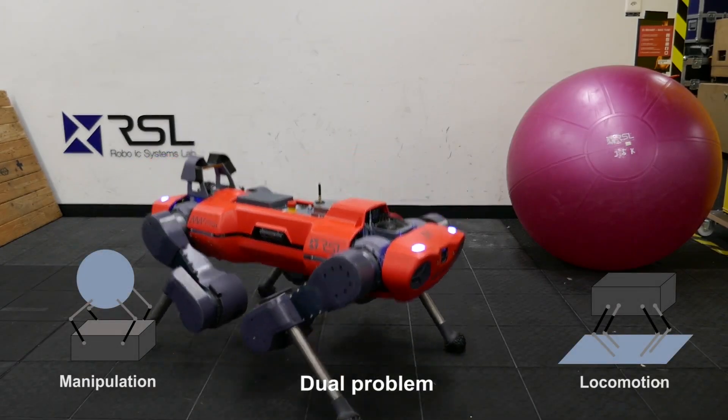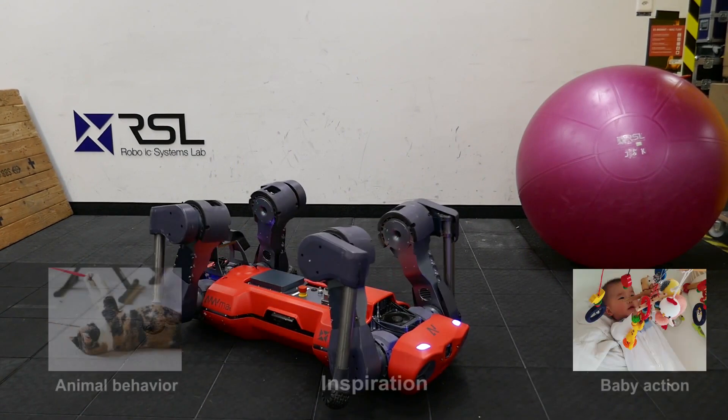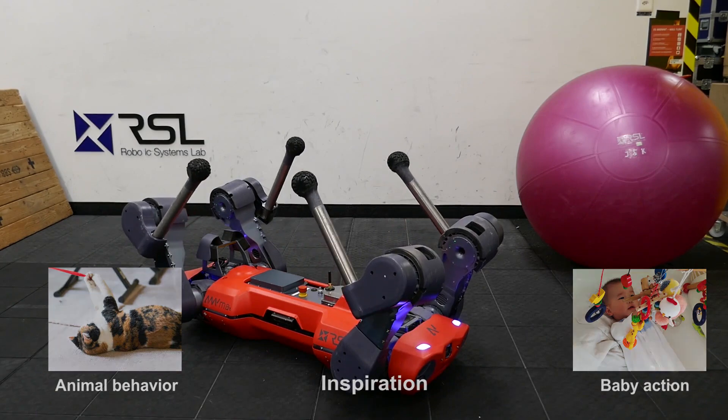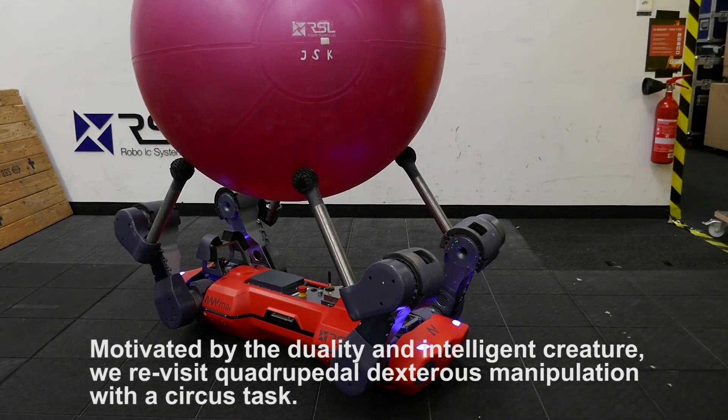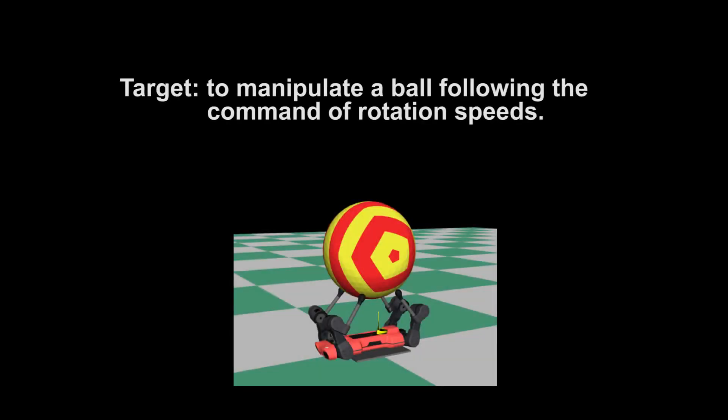Multi-fingered manipulation and multi-legged locomotion have been regarded as dual problems. Inspired by manipulation behavior of animals or children, we showcase dynamic dexterous manipulation ability of quadrupeds by rotating a circus ball at a given speed without dropping it or causing self-collisions of the legs.